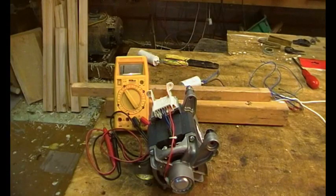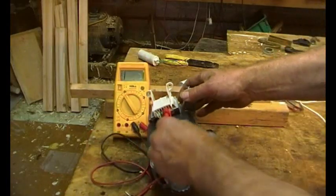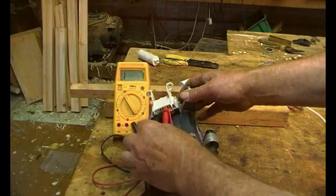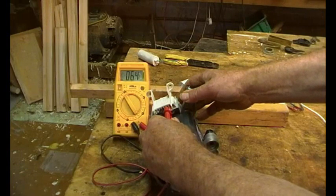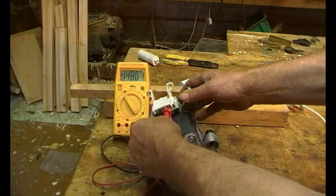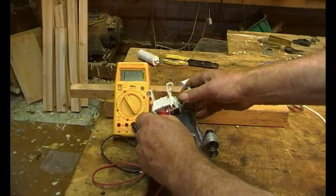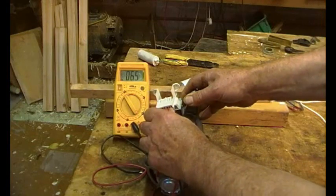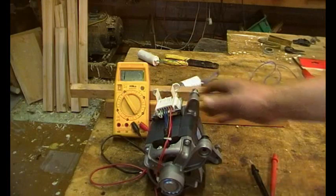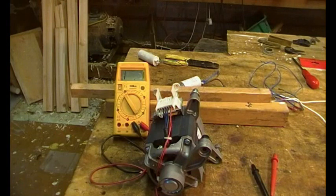But those three wires there are the three phases. So I'm assuming the first thing to do is to check that all three sets of coils are the same resistance. That's the plan. So we've got the meter set on 200 ohms.